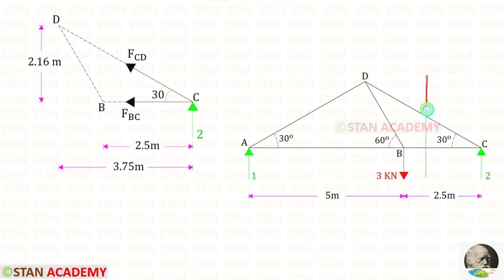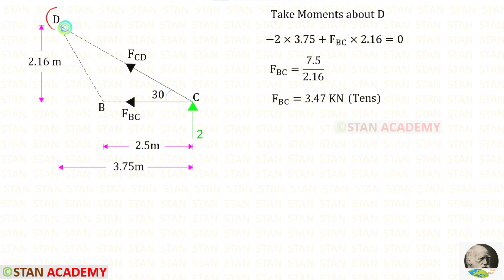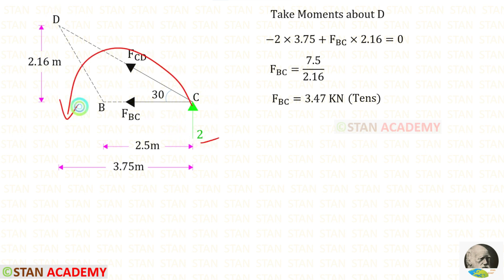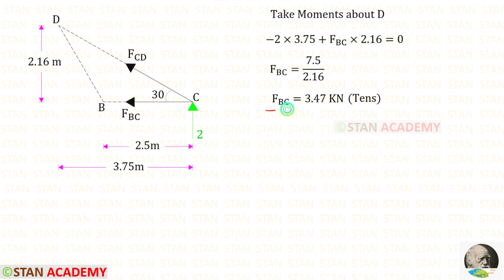Now I am going to make the second section like this and I am going to take the right side part and do the analysis. Let us take moment about D. When we take moment about D we should not consider FCD. The remaining forces are FBC and 2. 2 is acting in the anticlockwise direction so that it will be negative and the distance is 3.75. FBC is acting in the clockwise direction so that it will be positive and the distance is 2.16. For FBC we will get a positive value, which means it is tensile.